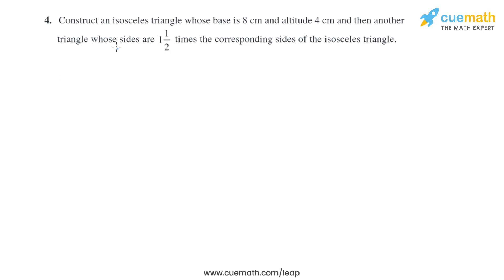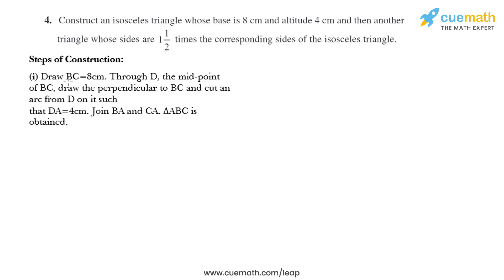Question 4 of this exercise says: construct an isosceles triangle whose base is 8 centimeters and altitude 4 centimeters, and then another triangle whose sides are one and a half times the corresponding sides of the isosceles triangle. So let's start.